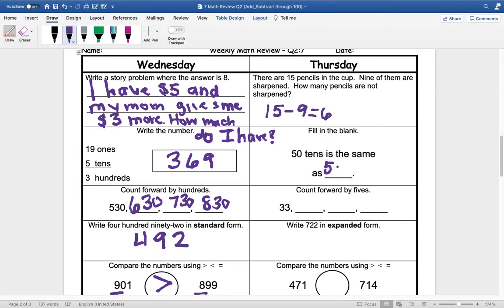50 tens is the same as 500. Counting forward by 5 starting with 33, we would then go to 38, 43, and then 48.